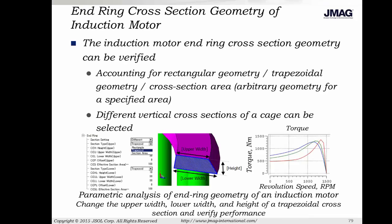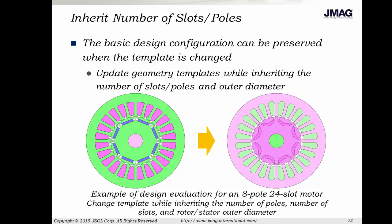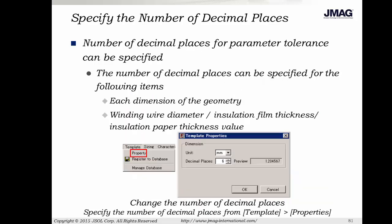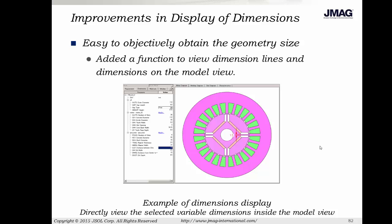In JMAG Express, we had the end ring cross section for the geometry of the induction machine, so now we can account for rectangular, trapezoidal, or a custom cross-sectional area for our end ring. We also have the ability to hold over the number of slots and poles in our stator or rotor — instead of going back and defaulting to a default geometry, it'll try to maintain the geometry as best as possible. So if you have a 36-slot stator, it'll try to hold that number of slots and the rough dimensions if you modify the actual stator topology. We also have the ability to specify the number of decimal places in the dimensional display, as well as the unit system we would like to work with. The display on dimensions has also been improved.